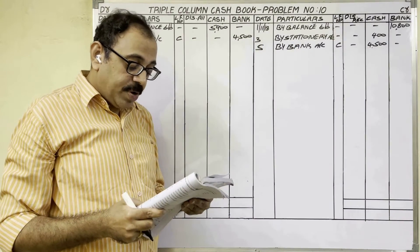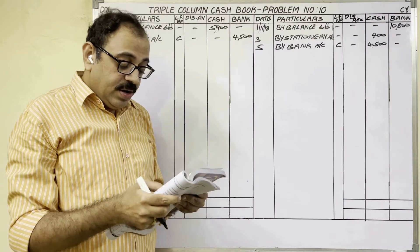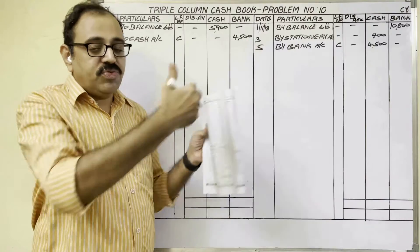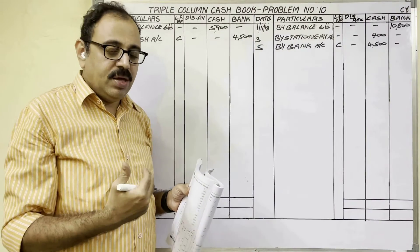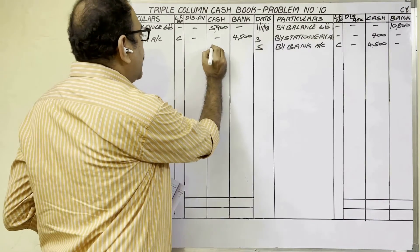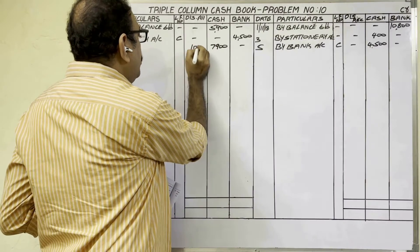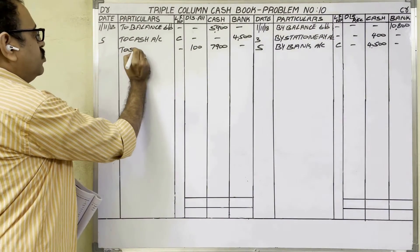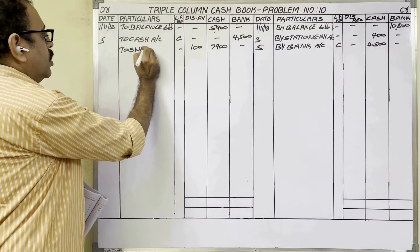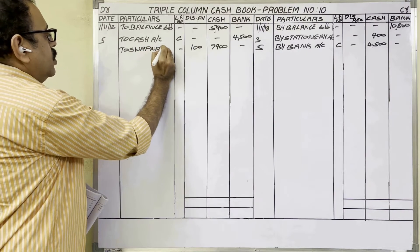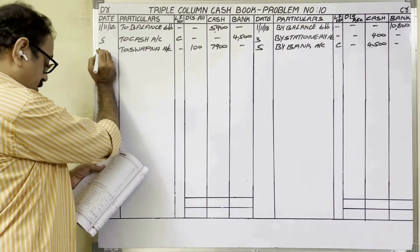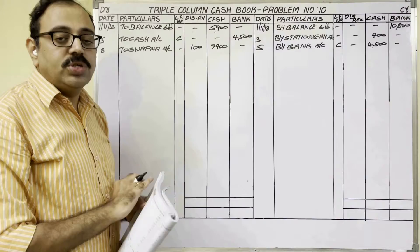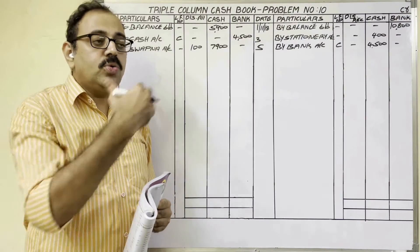Eighth date: received cash from Swapna 7,900, discount amount 100 rupees. The firm is receiving cash from Swapna, so cash is coming — debit side cash column. Discount amount 100 rupees goes in the discount column. We are receiving from Swapna, so in the particulars write 'to Swapna account.'